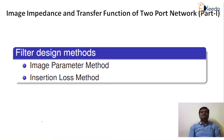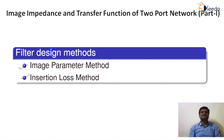There are two methods used for designing a filter. First is the image parameter method and second is the insertion loss method. The behavior of the passband of a filter is determined in terms of image parameter and insertion loss. We will concentrate on the first method, that is the image parameter method.